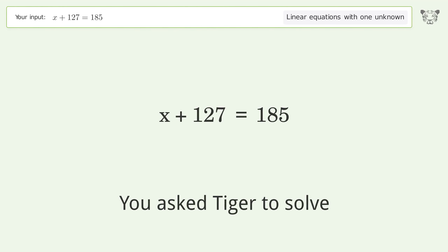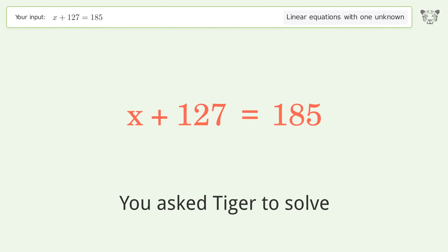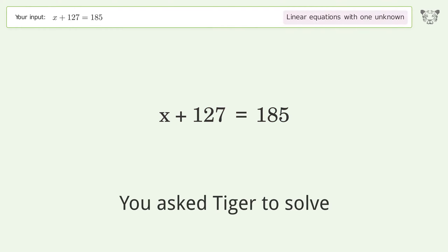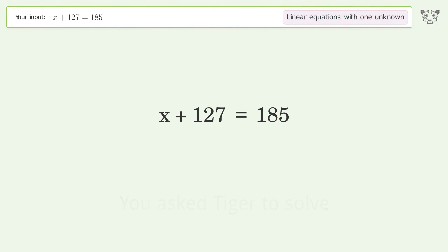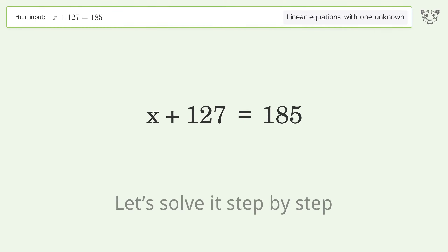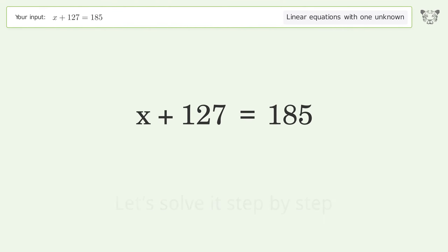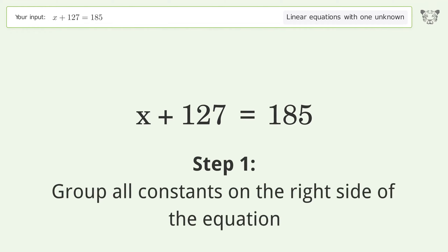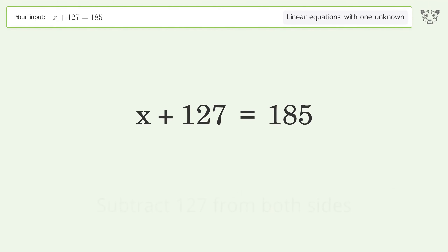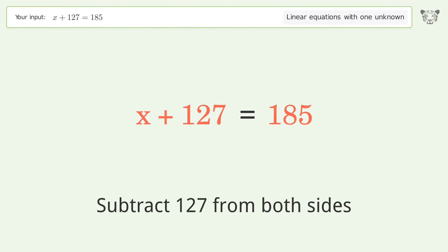Tiger is asked to solve a linear equation with one unknown. The final result is x equals 58. Let's solve it step by step: group all constants on the right side of the equation by subtracting 127 from both sides.